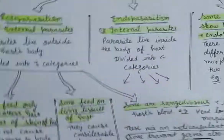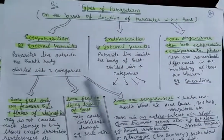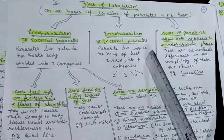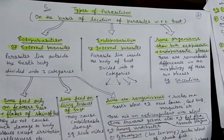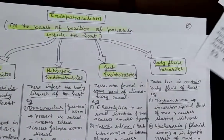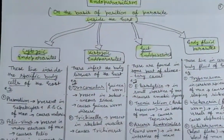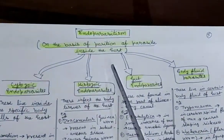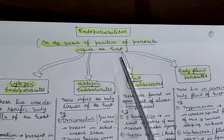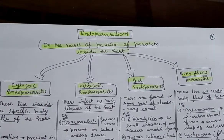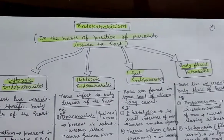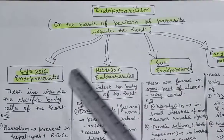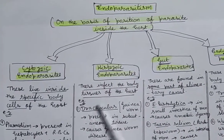Now we move towards endoparasitism, in which the parasite lives inside the body of the host. The parasite lives inside the host's body, and based on the position of the parasite inside the host, this endoparasitism is of four types.